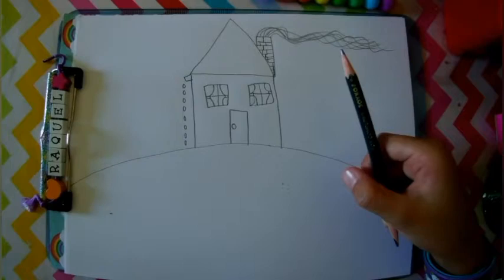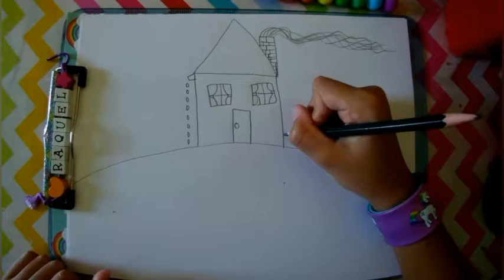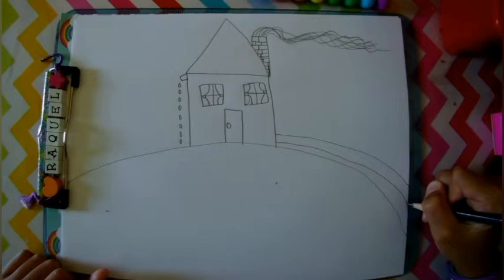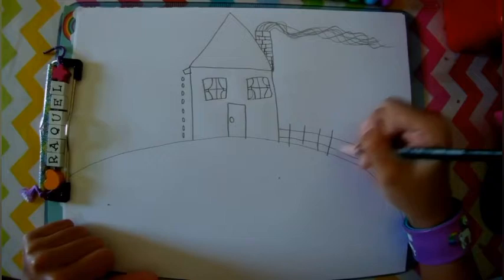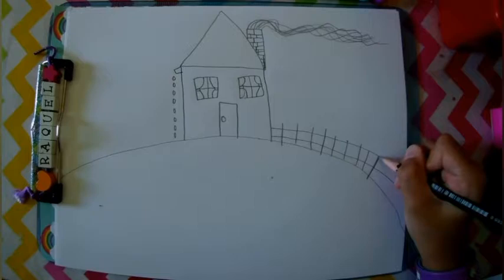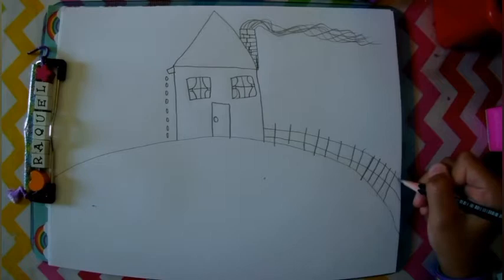And then you're just going to draw a line down again and another one. And some line downs to make a fence. Because this house, the owner of this house might have horses. You don't have to draw it but it will look much prettier.